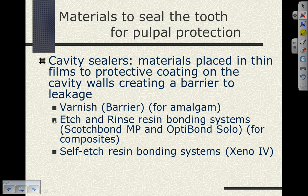We use adhesives to create a barrier to leakage — bonding agents. We can use etch-and-rinse resin bonding systems where we etch the tooth first, then place an adhesive such as Scotch Bond Multipurpose (a fourth-generation adhesive) or Optibond Solo (a fifth-generation adhesive) for composites. In our clinics, we also have a self-etched resin bonding system — the Xeno-4 material — where the bonding system itself etches the cut enamel and dentin. Predominantly for composite restorations, we use etch-and-rinse with phosphoric acid first, then the bonding agent, for sealing the tooth and providing retention.